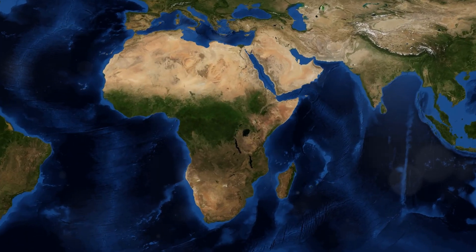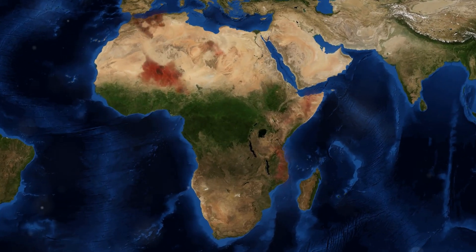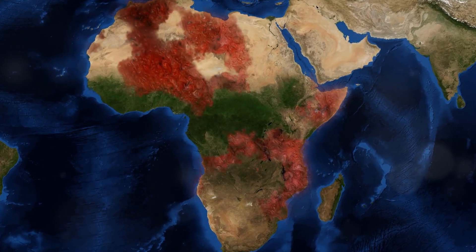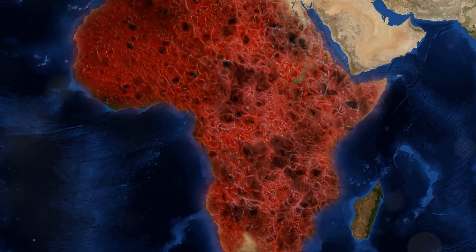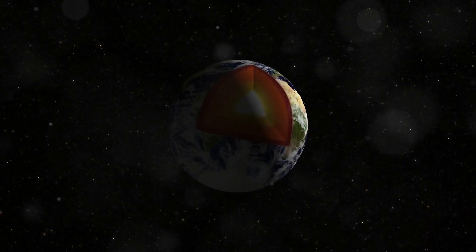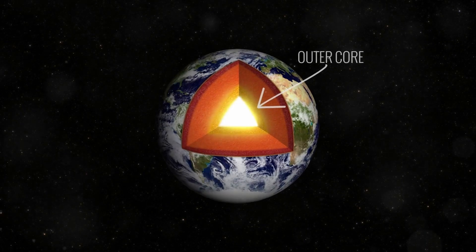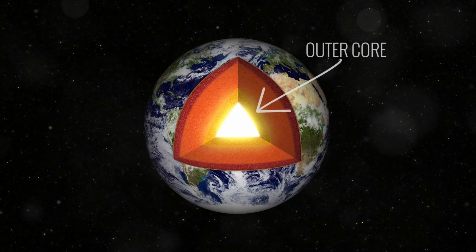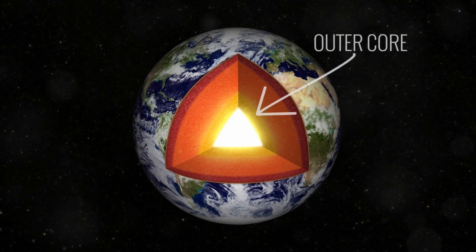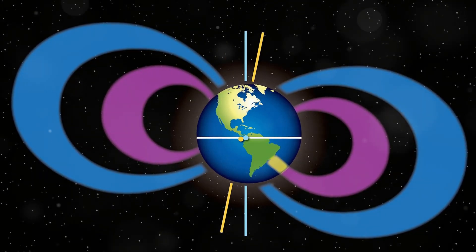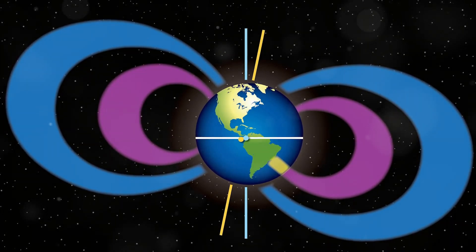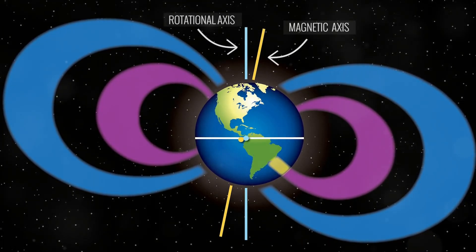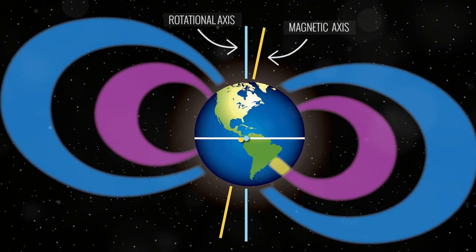One of the most significant being the African Large Low Shear Velocity province. This region, located about 2,900 kilometers beneath Africa, contains dense rock formations that disrupt the flow of molten metal in the outer core, weakening the magnetic field above it. This disturbance, combined with the tilt of Earth's magnetic axis, results in the dramatic weakening of the magnetic field in the South Atlantic region, giving rise to the South Atlantic anomaly.